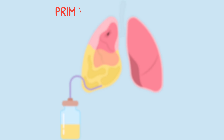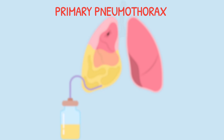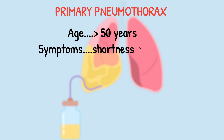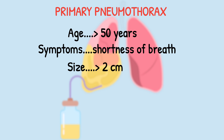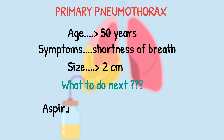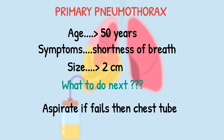However, if the patient is more than 50 years old, is very short of breath, and the size of the pneumothorax is more than two centimeters, the plan of action is to aspirate. If aspiration fails, then insert a chest tube.